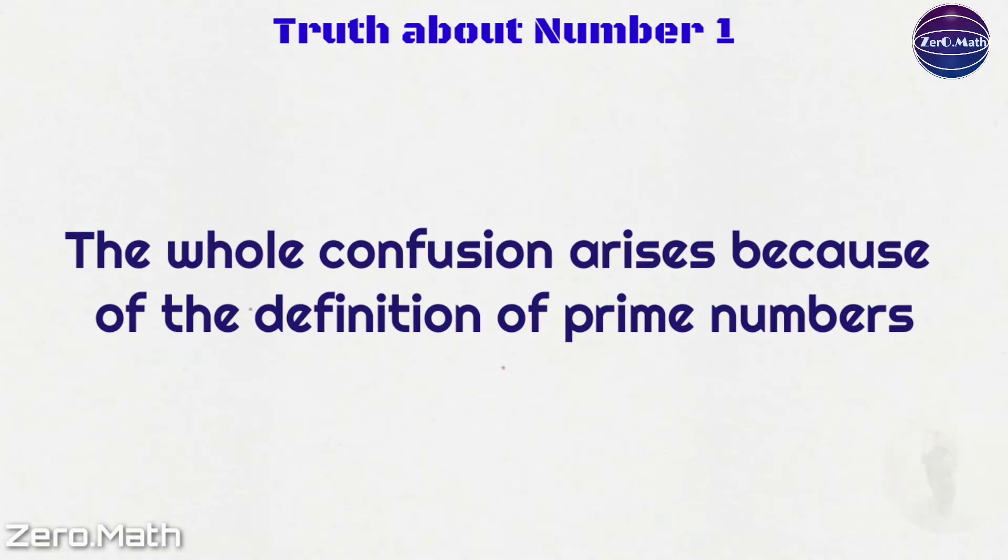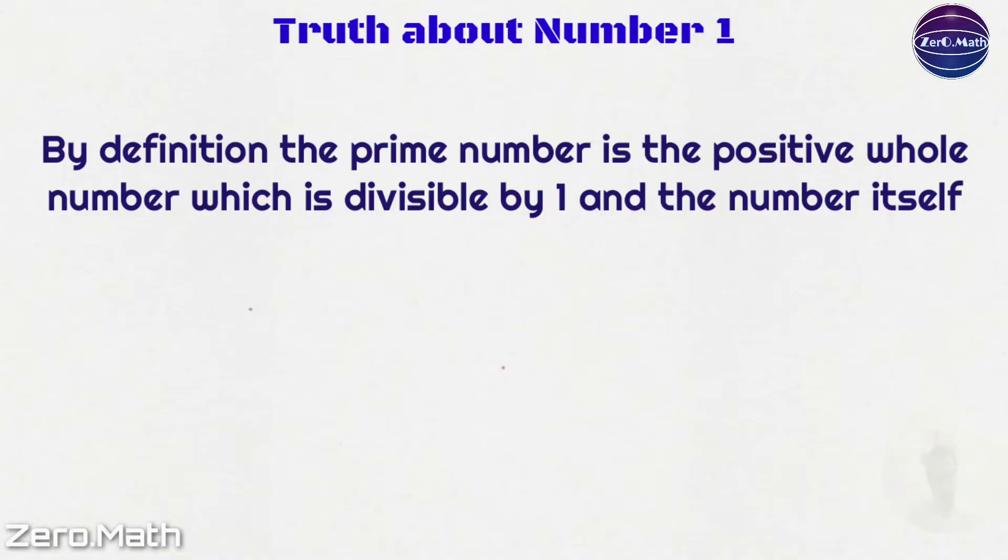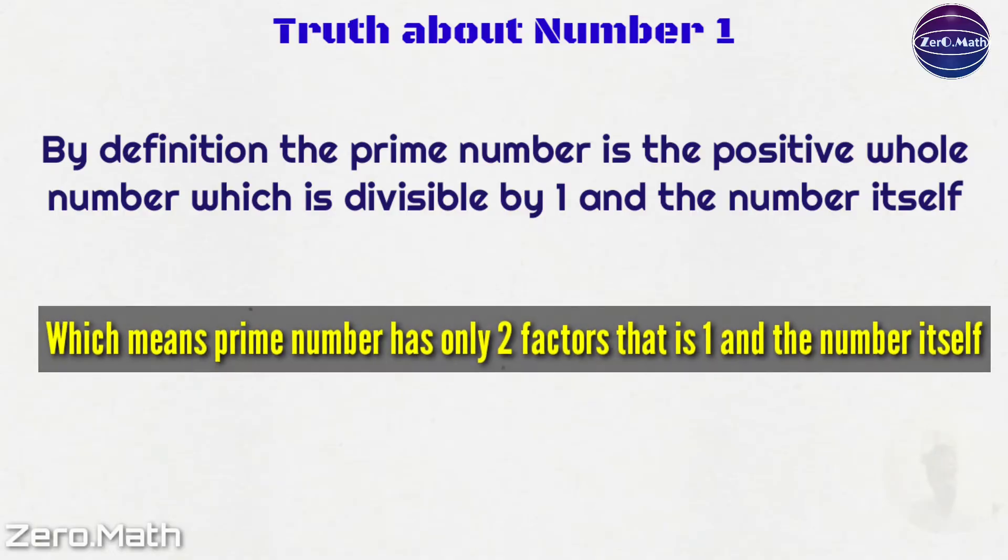The whole confusion arises because of the definition of prime numbers. By definition, the prime number is a positive whole number which is divisible by 1 and the number itself, which means it has only 2 factors: 1 and the number itself.